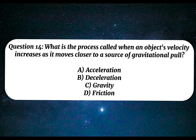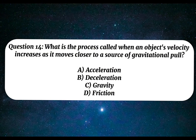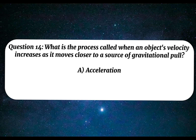Question 14. What is the process called when an object's velocity increases as it moves closer to a source of gravitational pull? A. Acceleration. B. Deceleration. C. Gravity. D. Friction. Correct answer: A. Acceleration.